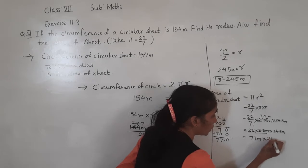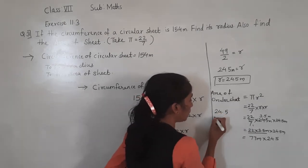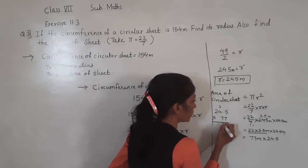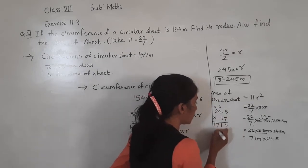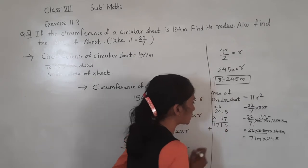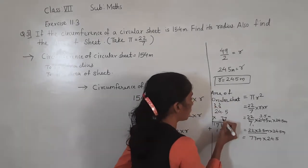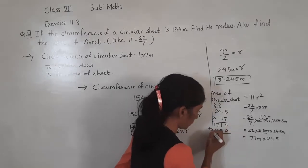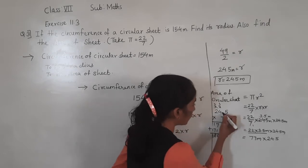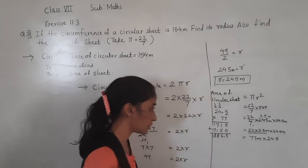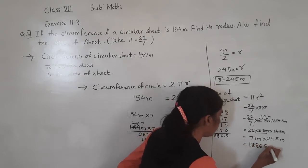Now multiply 24.5 by 77. First: 7 × 5 = 35, carry 3; 7 × 4 = 28 + 3 = 31, carry 3; 7 × 2 = 14 + 3 = 17. Then: 7 × 5 = 35, 7 × 4 = 31, 7 × 2 = 17. Adding: 1715 + 1715 = 18865. One decimal place gives 1886.5 metre square.